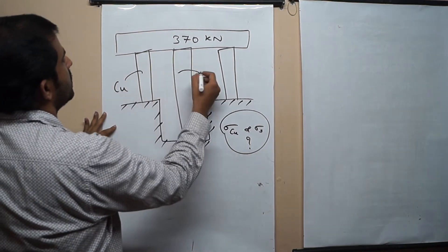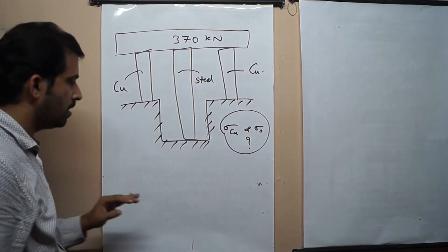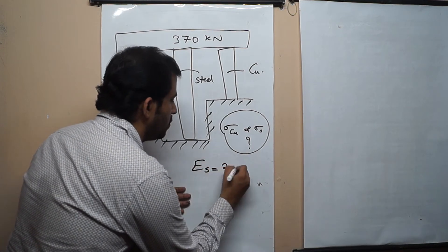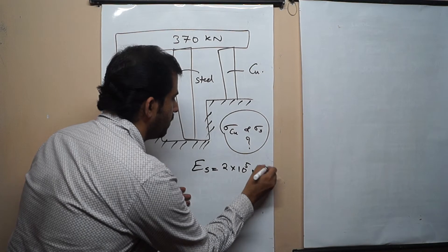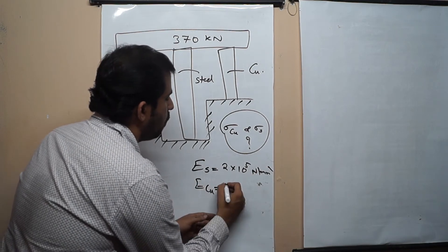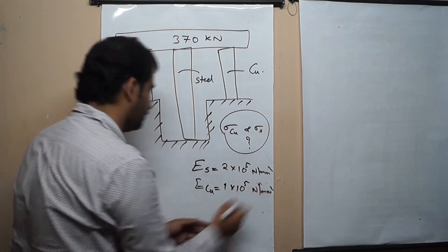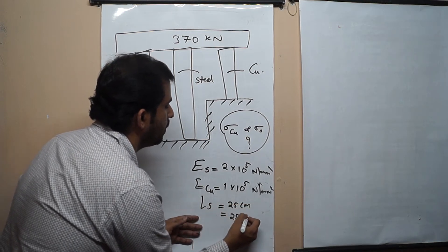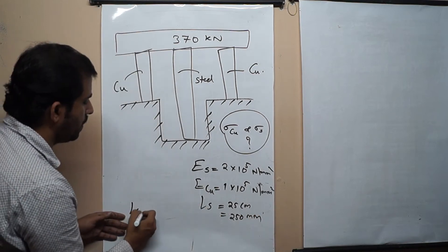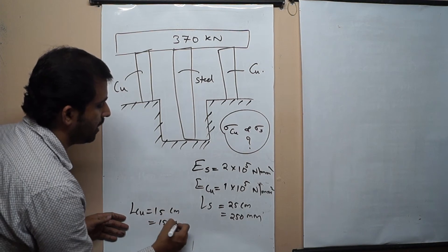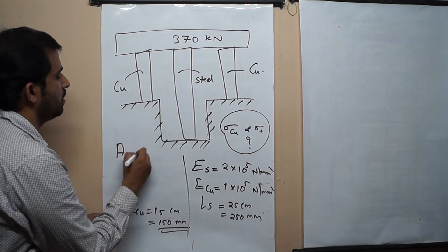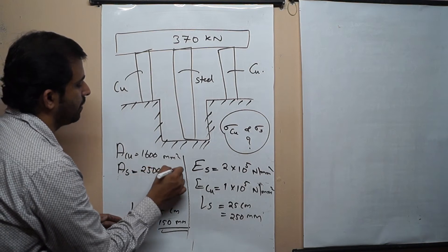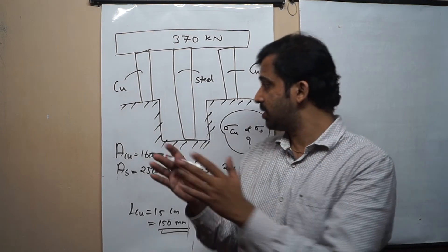This is a copper bar, this is a steel bar, and this is another copper bar. The given data: elastic modulus of steel is 2×10⁵ N/mm²; elastic modulus of copper is 1×10⁵ N/mm². Length of steel is 25 cm, that is 250 mm. Length of the copper rod is 15 cm, that is 150 mm. Area of copper is 1600 mm² and area of steel is 2500 mm². Calculate stress on the copper and stress on the steel.